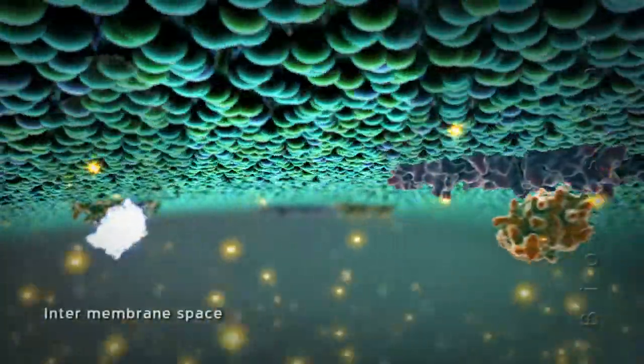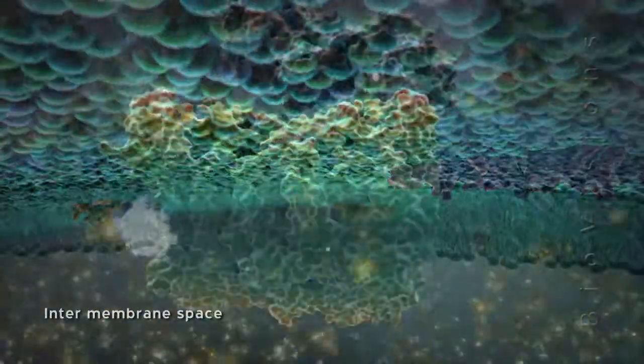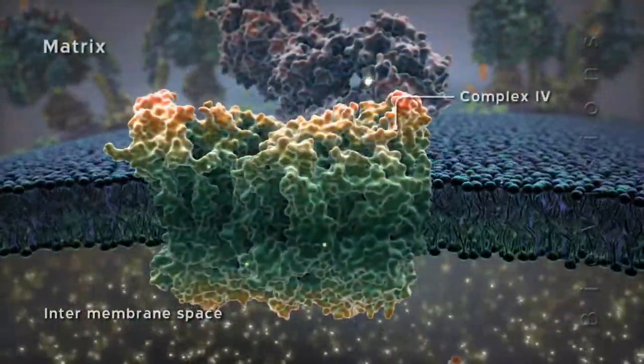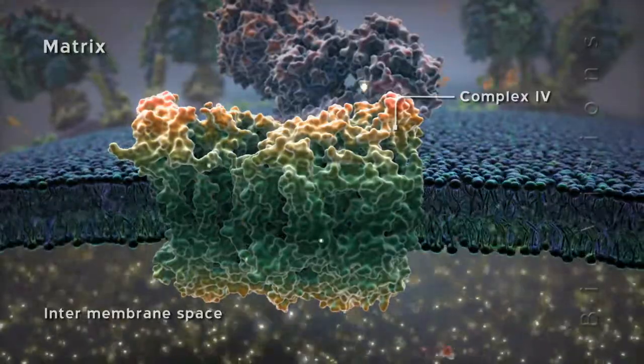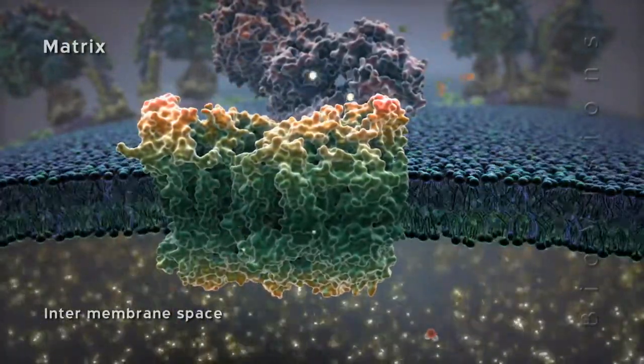Finally, electrons are accepted by cytochrome C, which carries them to complex 4, where they are transferred through another series of redox centers to their final acceptor, a molecule of oxygen that combines with hydrogen ions to form water.